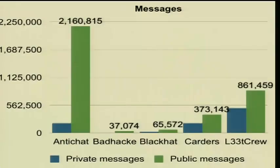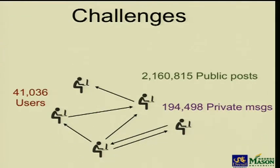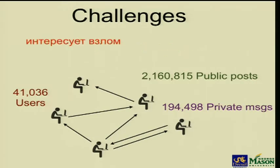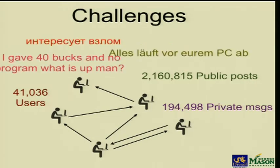Looking at the number of private and public messages, Antichat was the largest forum and Leech Crew was the second largest. This dataset was really large — just in one forum we had thousands of users and millions of messages, making manual analysis very hard. On top of that, each forum was in a different language: Russian, German, and English. Analyzing posts from different languages is very hard for one person, but as I'll show later, we can easily automate this process and identify people much faster using automated analysis.